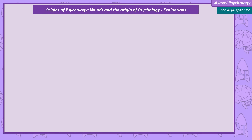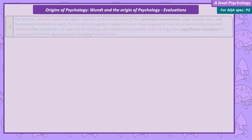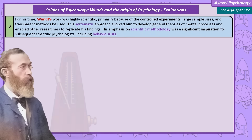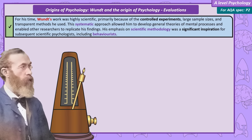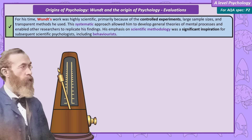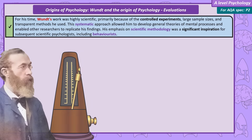The main positive criticism of Wundt is that, compared to what came before, his work is scientific. This is mainly due to the controlled nature of his experiments, large samples, and clear methods that were open to replication. This has inspired later scientific psychologists to also study the mind using controlled methods.